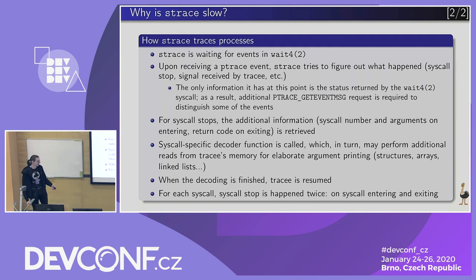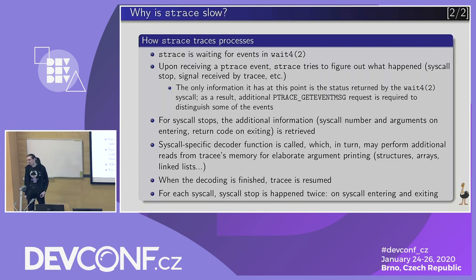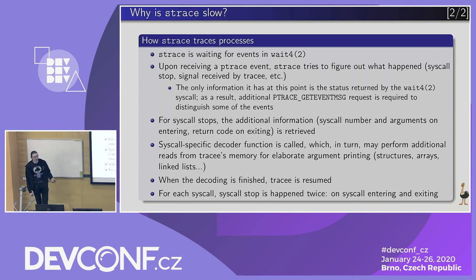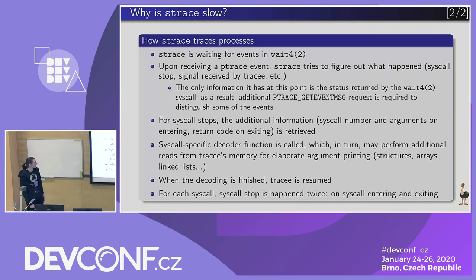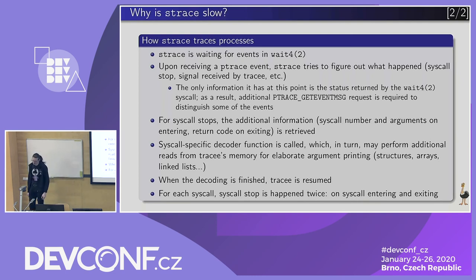Then it reads the information from the tracee — usually registers, but sometimes memory depending on the architecture — to figure out what the syscall is and what its arguments are. Based on the syscall number, a specific decoder is executed, which may perform additional memory reads to properly decode the syscall and present it to the user. When decoding is finished, the tracee is resumed. These stops and resumes happen twice for each syscall, which is unfortunate.